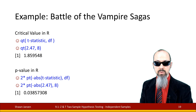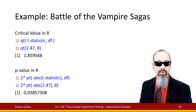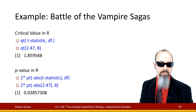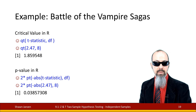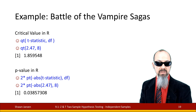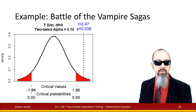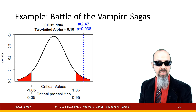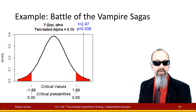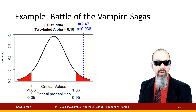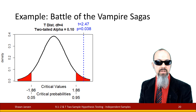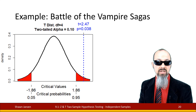I always recommend drawing out a curve if you're new to this. With alpha of 0.10 on a two-tail test, I put 0.05 on either side, corresponding to critical values of negative 1.86 and positive 1.86. Drawing in my t-score of 2.47, I'm definitely into the shaded critical region in the upper tail — so I am statistically significant. I can reject the null and say that the critics do differ in their opinions about which movies they like better on average, Twilight versus Underworld.